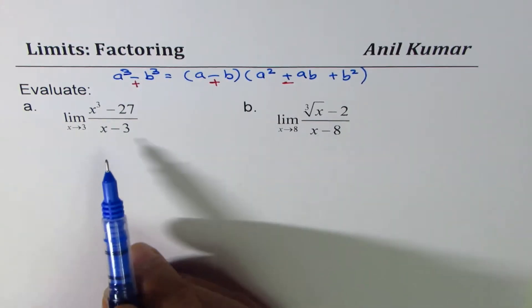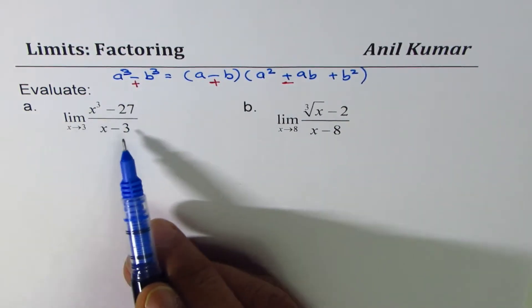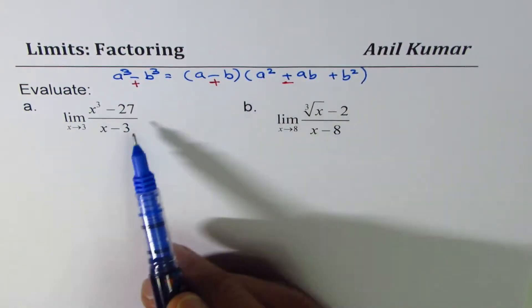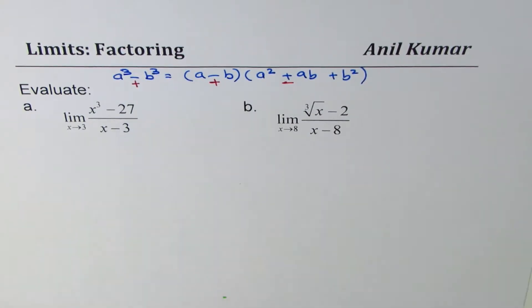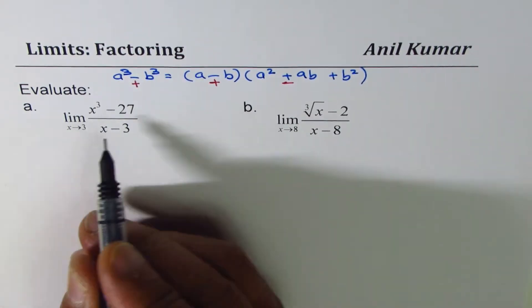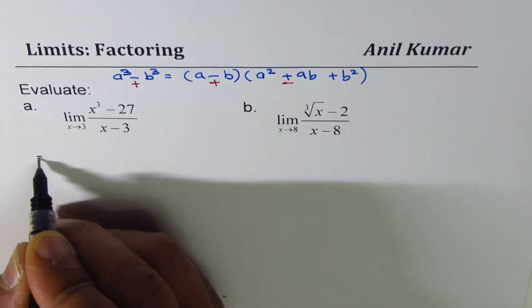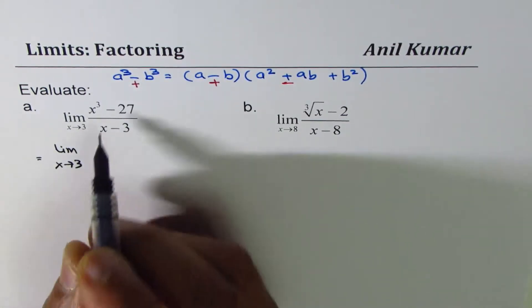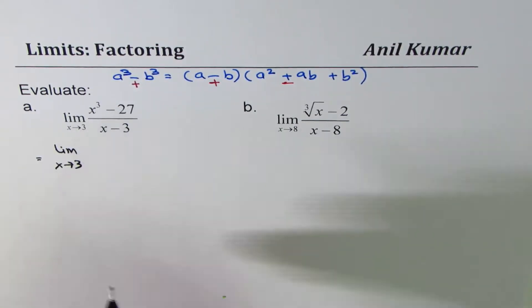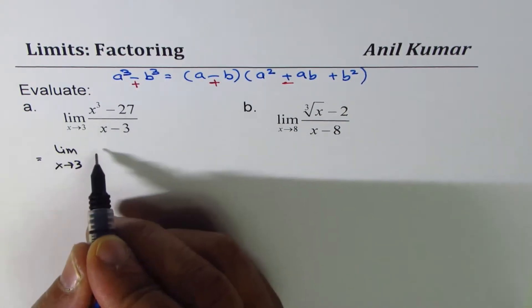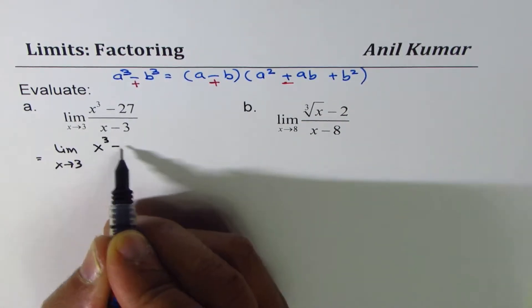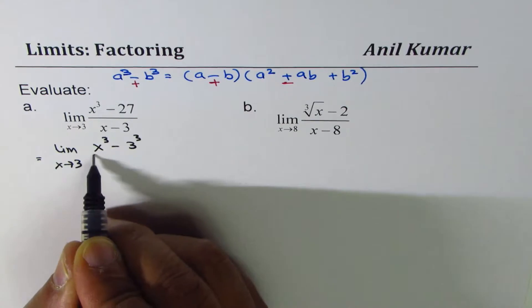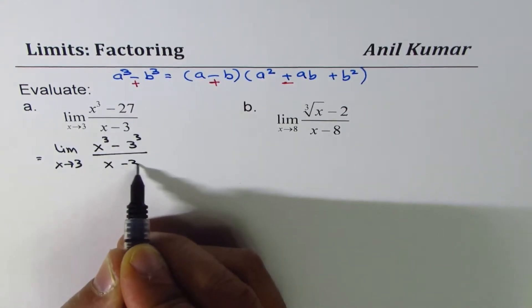Both these examples I've taken here with difference of cubes, you can actually factor and find the limit. You can pause the video, factor and find the limits of these questions. So let's work it out. The first one is: limit as x approaches 3 of (x cubed minus 3 cubed) divided by (x minus 3).